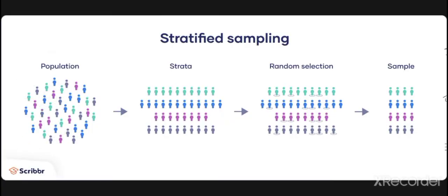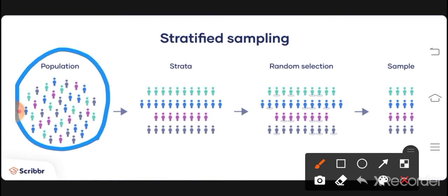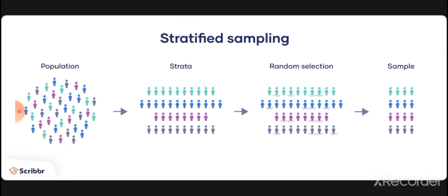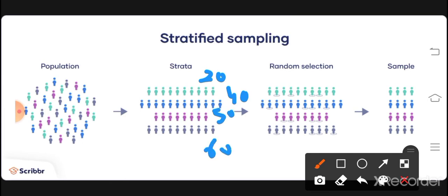The fourth type is stratified sampling, which is the best method of sampling — always remember that. In stratified sampling, the population is divided into subgroups called strata. For example, the population is separated by age: green = 20 years, blue = 40 years, pink = 50 years, black = 60 years. This means stratified sampling — you create subgroups from the population.